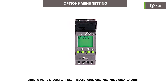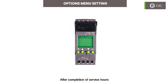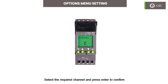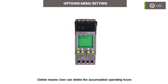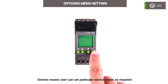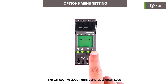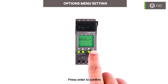The Options menu is used for miscellaneous settings. Press enter to confirm. 'Operating Hours' enables the user to set and monitor load service hours. After completion of the set service hours, the device displays an alarm, which can be used for maintenance or other activity. Select the required channel and press enter to confirm. 'View Hour' shows the actual operating hours reading, 'Delete' clears accumulated hours, and 'Service' lets the user set specific service hours — maximum 99,999 hours. We will set it to 2,000 hours using the up and down keys, then press enter to confirm.